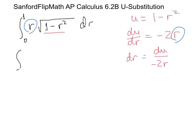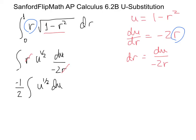I'm going to write √u a little differently as u^(1/2). Instead of writing dr I write du/(−2r). Notice that the r divides out, which is nice. The −2 I can bring out in front because it's just a constant being multiplied. So this becomes −1/2 times the integral of u^(1/2) du.